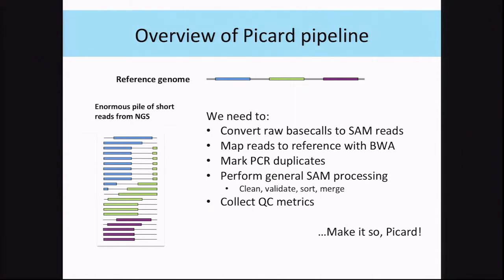In this step, the main things we're going to do are: convert the raw base calls coming off the sequencers to SAM reads; map them to a reference with BWA, which is an external alignment program; mark PCR duplicates, which is necessary for variant calling; perform various general processing on the SAM files — cleaning, validating, sorting, and merging data for multiple sequencing runs if necessary; and collect QC metrics to help the lab see how we're doing.